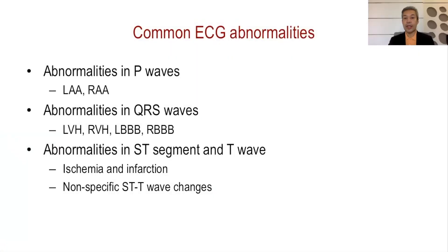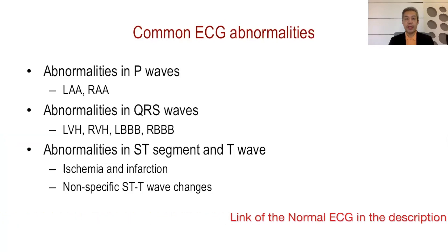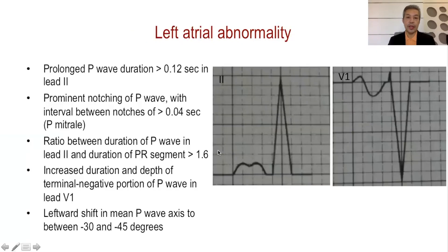Now let's go to the common ECG abnormalities. Please remember the normal variants and the normal measurements, because deviations of those will produce the common ECG abnormalities, namely abnormalities in the P wave, QRS, ST segment, and the T wave. Now let's go to left atrial and right atrial abnormality.